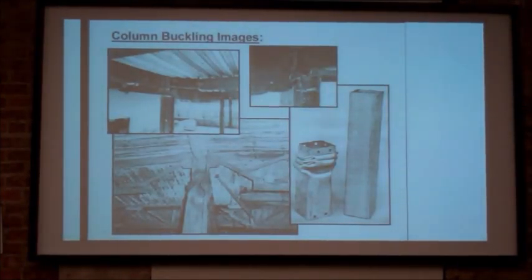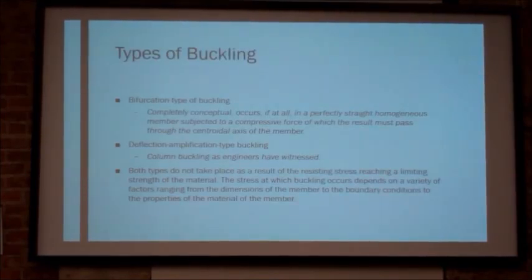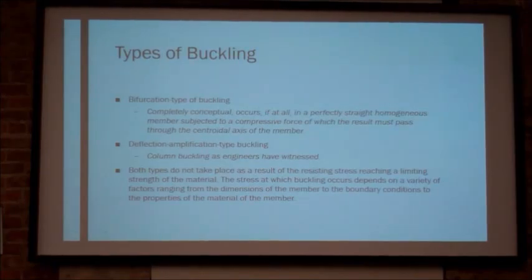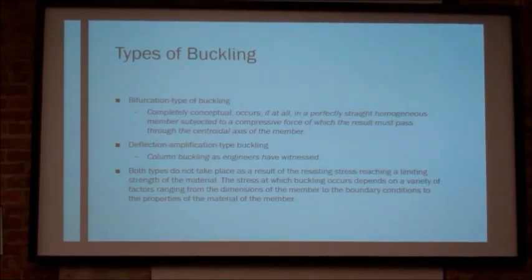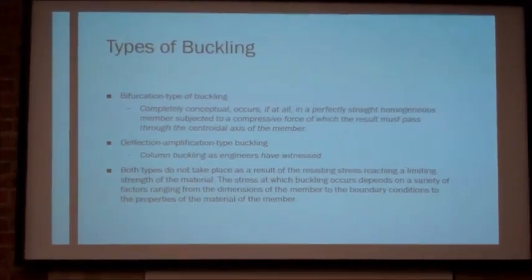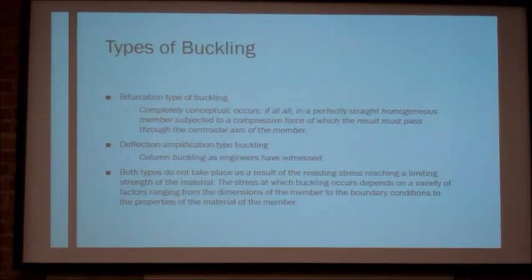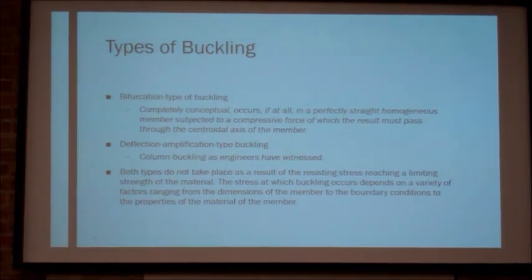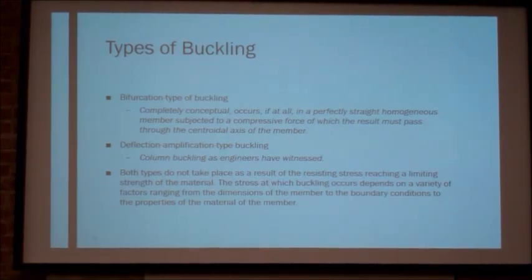Some images show where columns have buckled. There are two different types of buckling: bifurcation type, which is entirely conceptual if it occurs in a perfectly straight homogeneous member subjected to a compressive force through the central axis; and deflection amplification type buckling, which is the column buckling engineers have witnessed in real-world applications. Both types don't take place as a result of stress reaching a limiting strength. The stress at which buckling occurs depends on a variety of factors ranging from the dimensions of the member to the boundary conditions to the properties of the material.